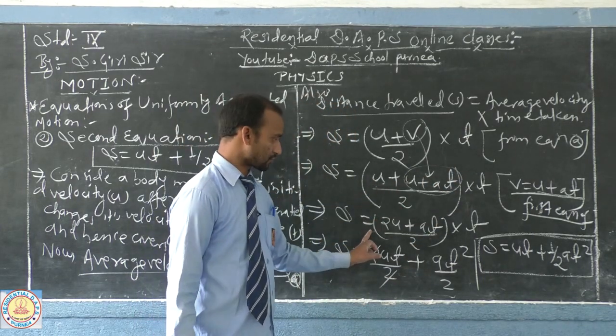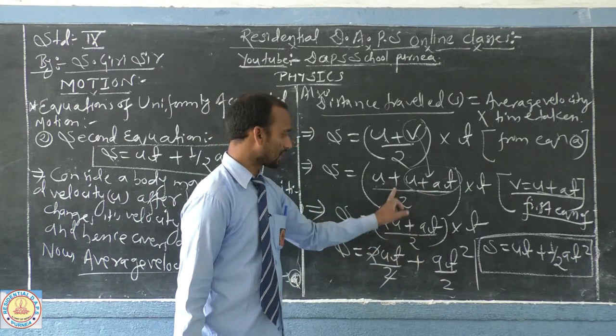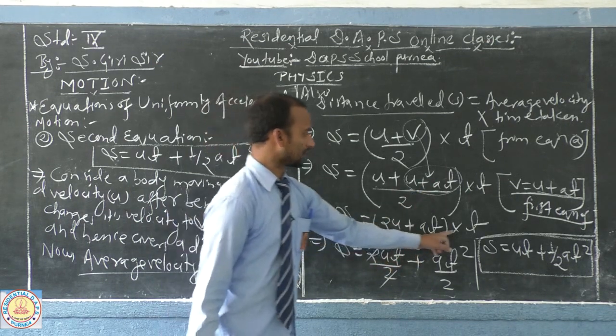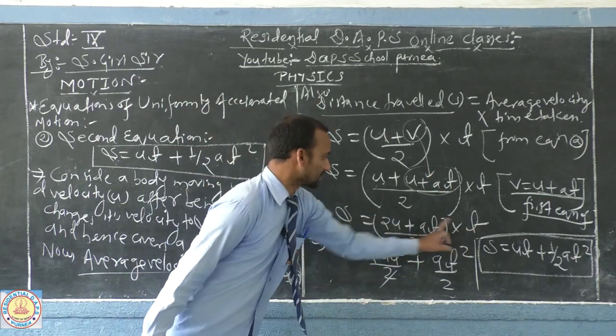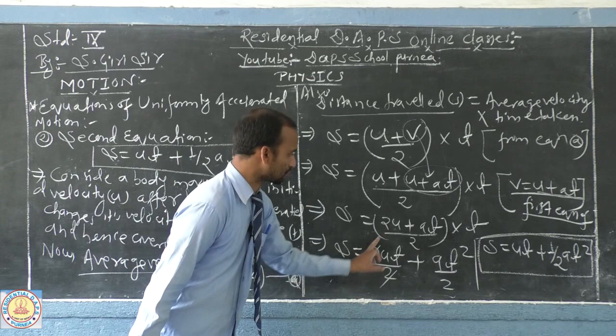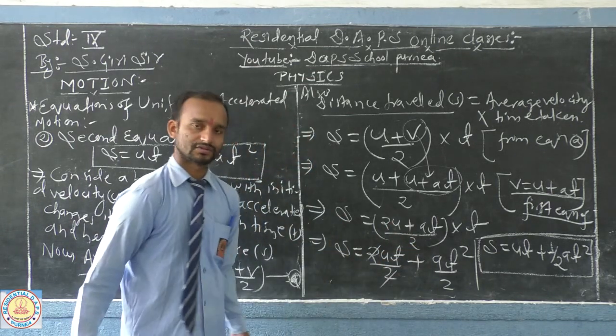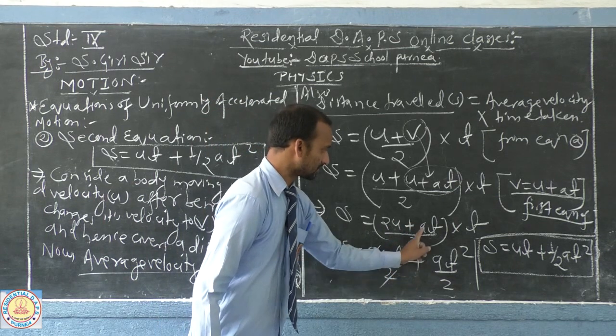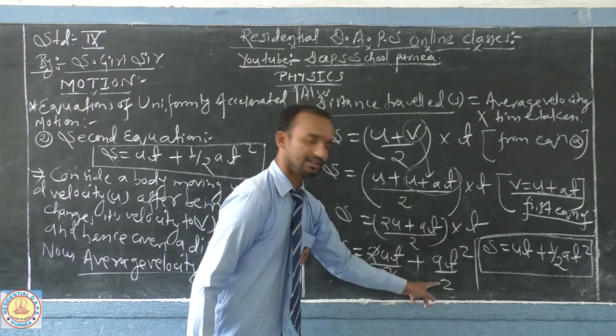Now, u plus u becomes 2u plus a t divided by 2 into t. You just multiply this quantity, you will get 2ut divided by 2. Plus a t into t, which is a t square divided by 2.